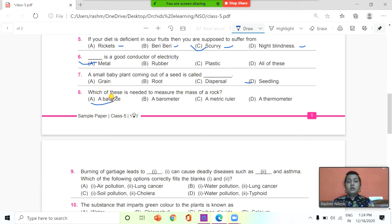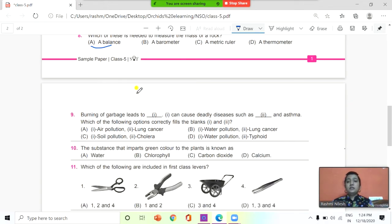Next, 9th question: burning of garbage leads to dash. First one can cause deadly diseases such as dash, this is second fill in the blank, and asthma. Burning of garbage leads to dash, can cause deadly diseases such as dash and asthma. Which of the following options correctly fills the blank 1 and 2? Now look at the options: A, air pollution and lung cancer. B, water pollution and lung cancer. C, soil pollution and cholera. D, water pollution and typhoid. So what is the correct answer? It is A, air pollution which causes lung cancer.